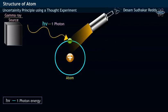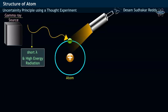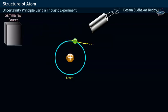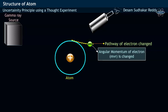At this moment, a short wavelength and high-energy gamma ray acting as a particle collides with a subatomic particle electron and thereby transfers its energy as well as momentum to the electron. This causes the electron to take different pathway. That is, the momentum of the electron is changed.